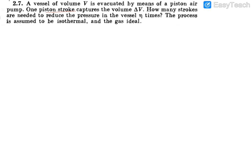Hello, let us consider this question. There is a vessel of volume V and you need to evacuate it by means of an air piston pump, and every stroke captures delta V volume out. We need to find how many strokes are needed so that the pressure is reduced eta times. This is an ideal gas and isothermal process.